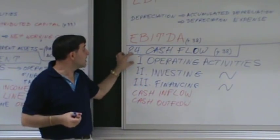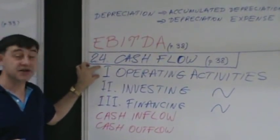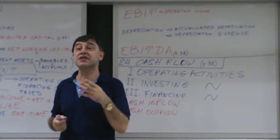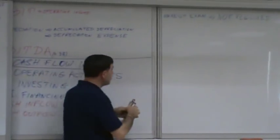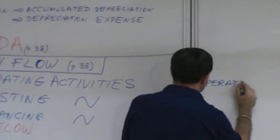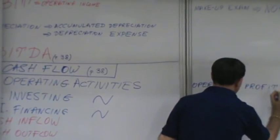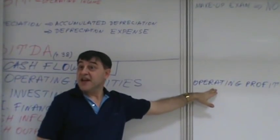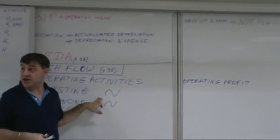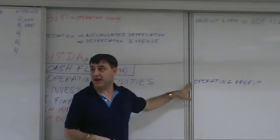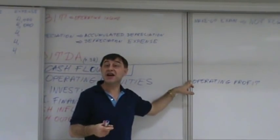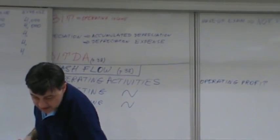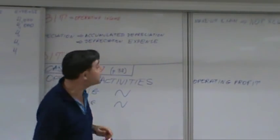Focusing on operating activities: operating activities generate cash in the form of operating profit. The operating profit is the basis for cash from operating activities — but not everything in the operating profit is cash. So we take the operating profit and adjust for things which are not cash. Number one adjustment — labeled C in the textbook — is depreciation and amortization.